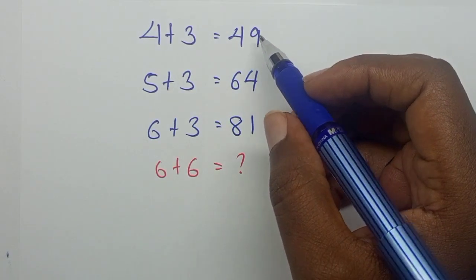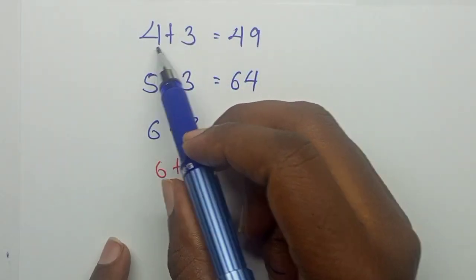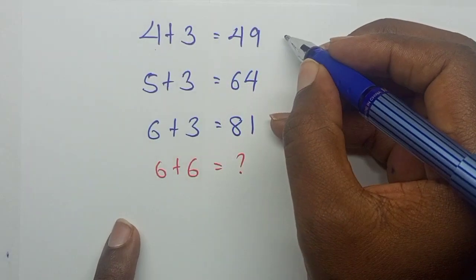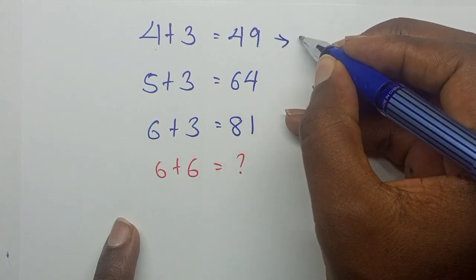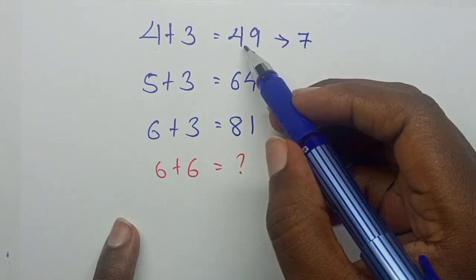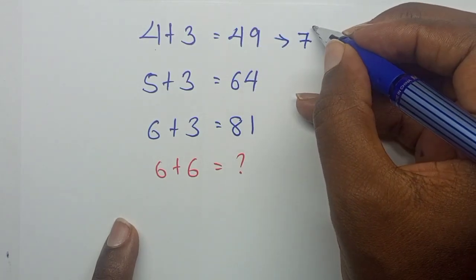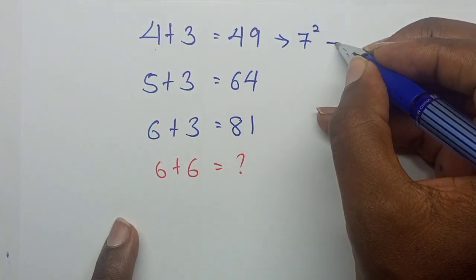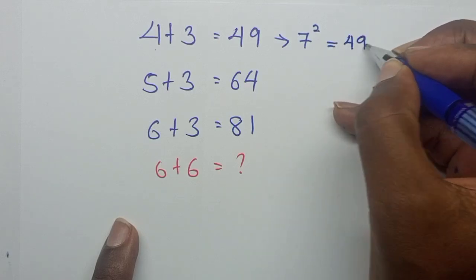Now as you can see, this is 4 plus 3. 4 plus 3 actually gives us 7. Now to get 49, they had to square 7 to get 49.